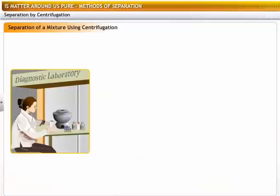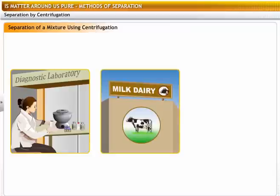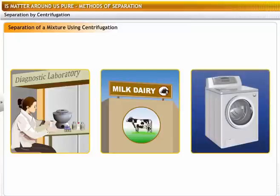Centrifugation is used for blood and urine testing in diagnostic laboratories, in dairies to separate butter from cream and in washing machines to squeeze out water from clothes.